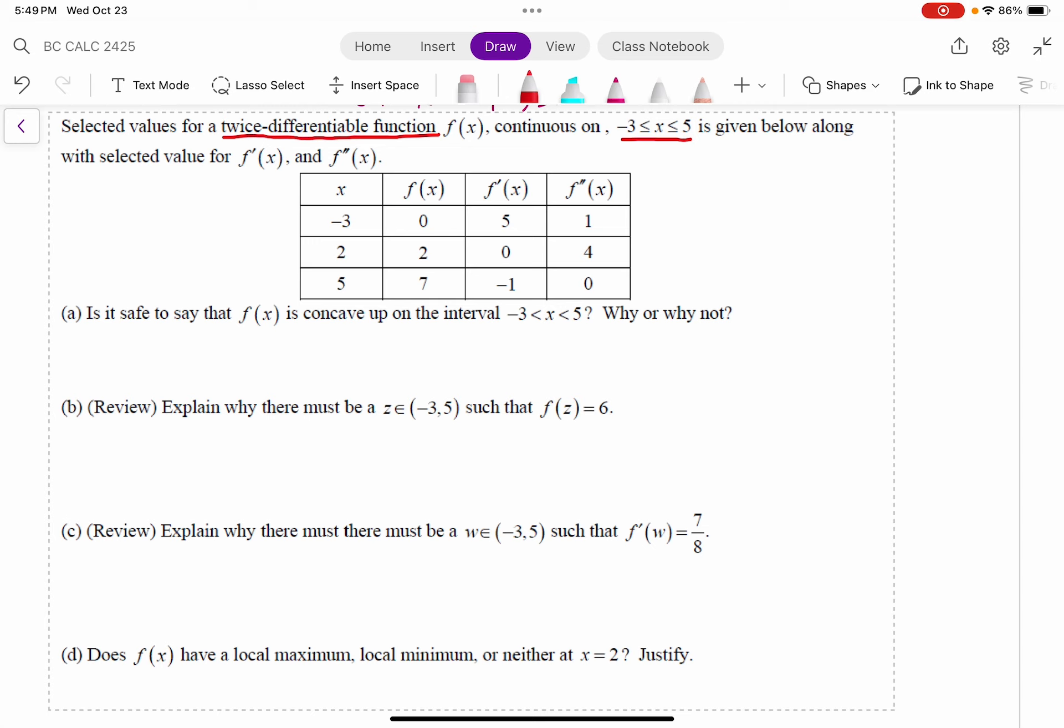The first question says, is it safe to say that f of x is concave up on the interval negative 3 to 5? Why or why not? So generally speaking you might go to the second derivative, right, is the second derivative positive on the interval?